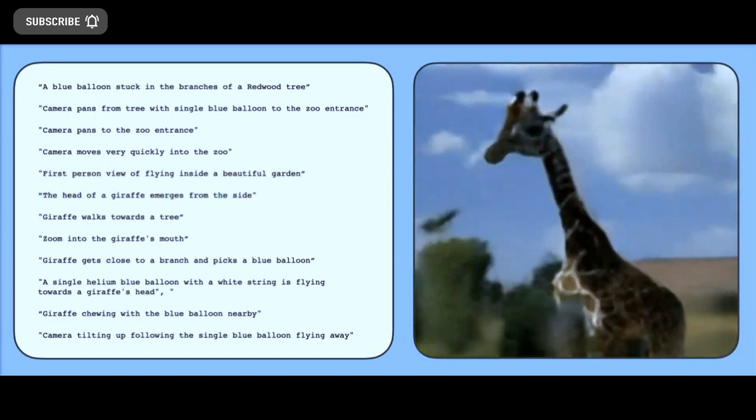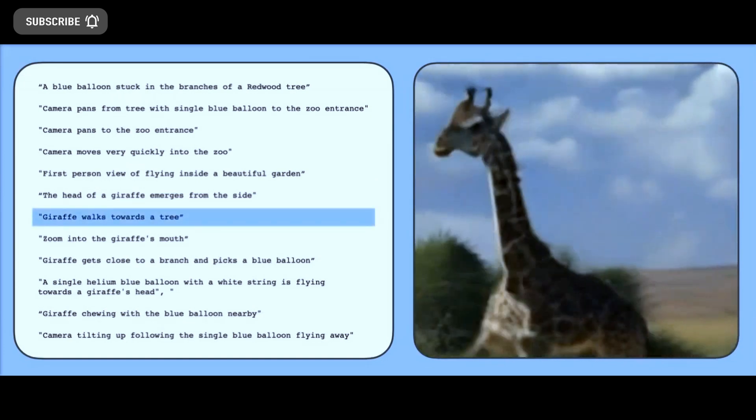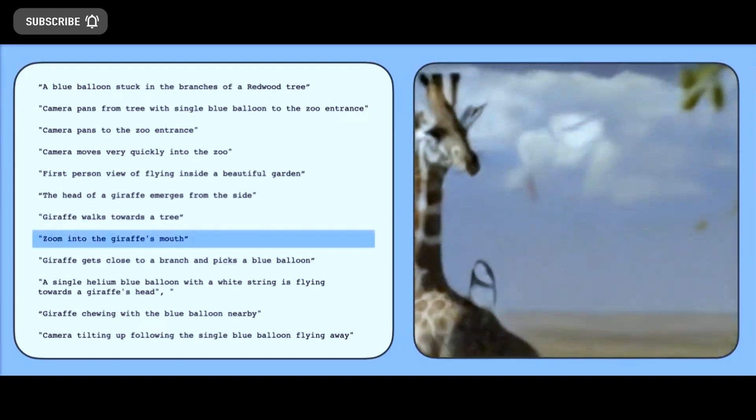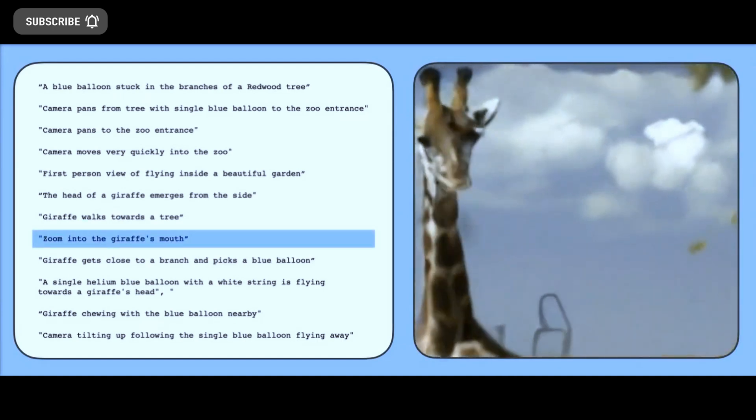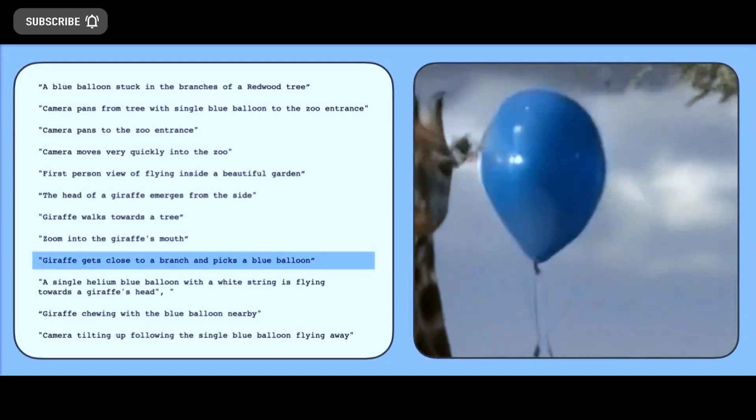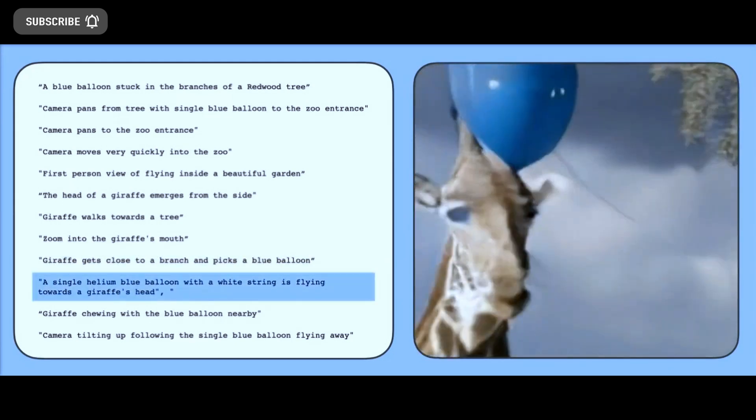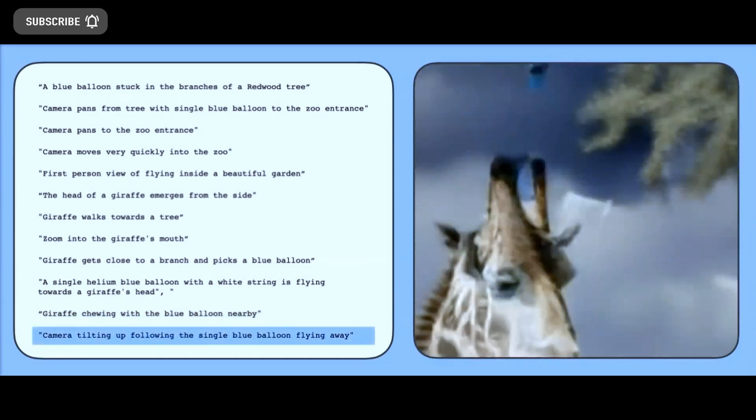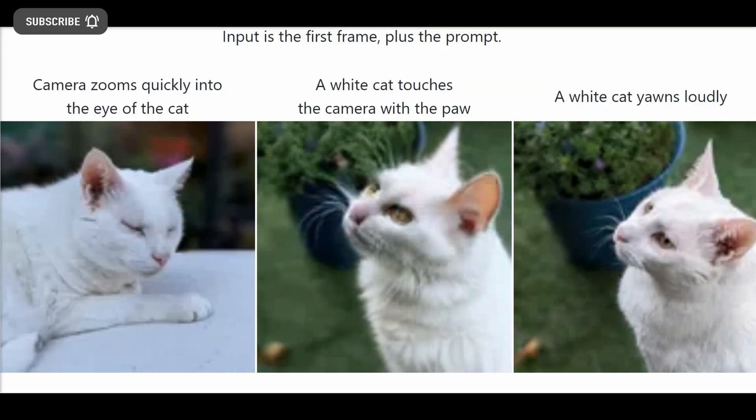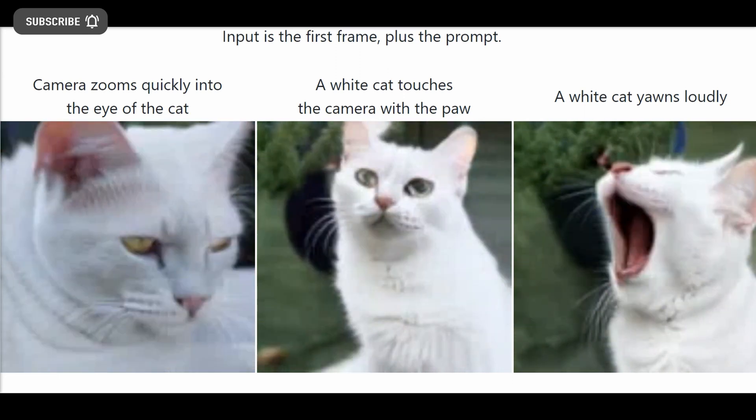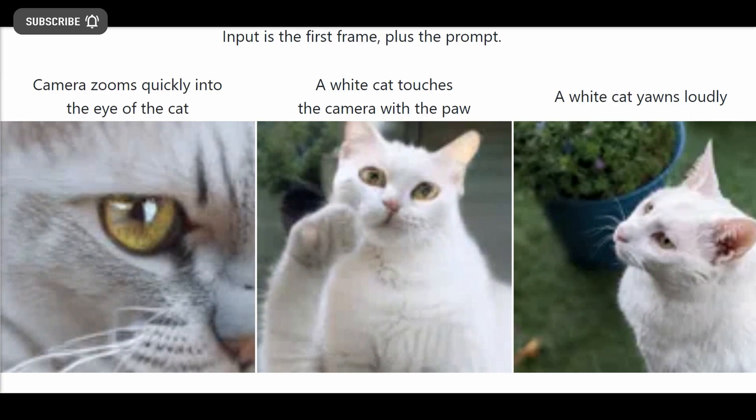After embedding user-entered text through a natural language processing pre-training model, a basic video diffusion model generates a 16-frame image with a resolution of 24 by 48 at a rate of 3 frames per second, then uses multiple temporal super-resolution and spatial super-resolution machine learning models to generate the final images. The machine learning model generates a 5.3-second video at 24 frames per second with a total length of 128 frames and a resolution of 1280 by 768.